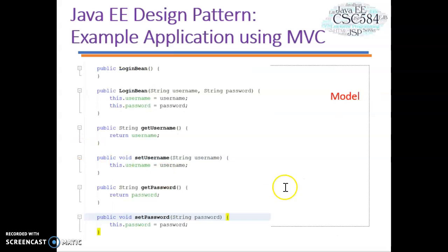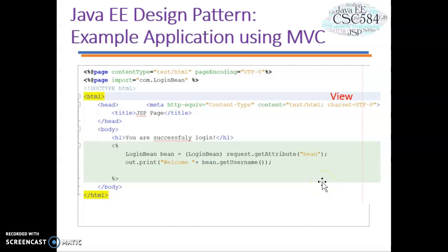Let's take a look at the model component, which is the login bean. This is a normal Java bean class that has a constructor and get and set methods. Next is another view component for displaying the successful login page. After the user has logged in and been validated, this page will be displayed. It calls the bean to get the bean name and prints out the username of the object, which is the user that has logged in.